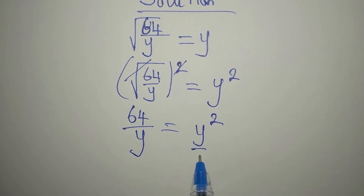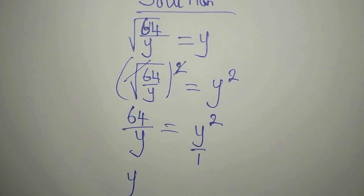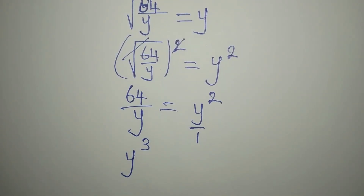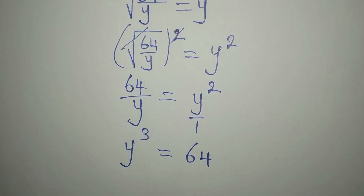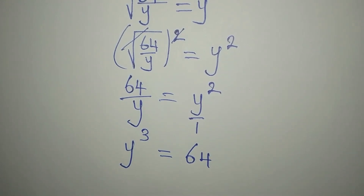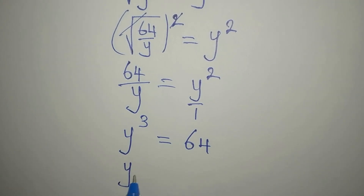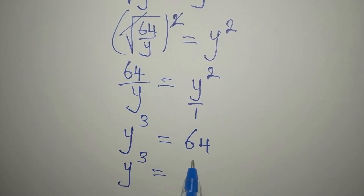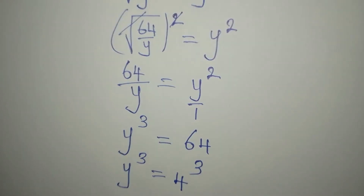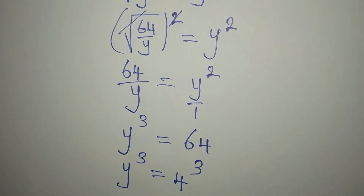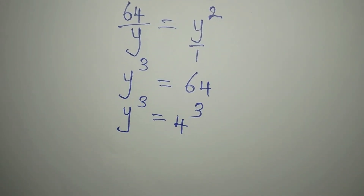This y squared is over 1, so we are going to multiply y times y squared, which gives us y to the power of 3. On the other hand, we have 64 times 1, which is 64. Now, if you take the cube root of 64 it will give you just one solution, so we are going to get three solutions. We have y to the power of 3 equals 64, and 64 can be expressed as 4 to the power of 3, because 4 times 4 is 16 and 16 times 4 is 64.